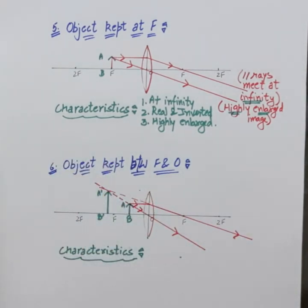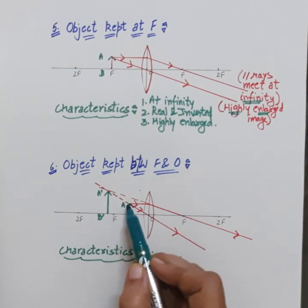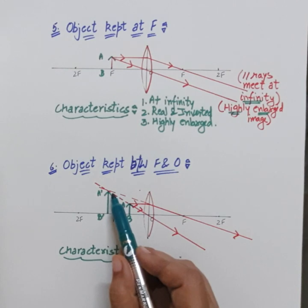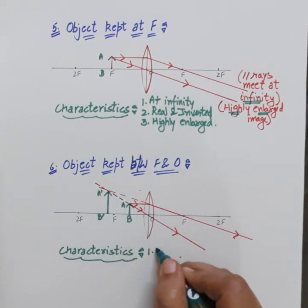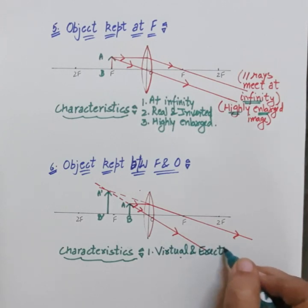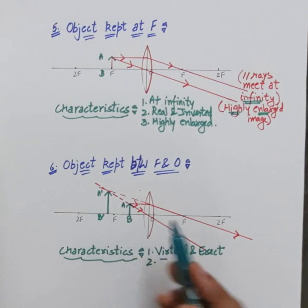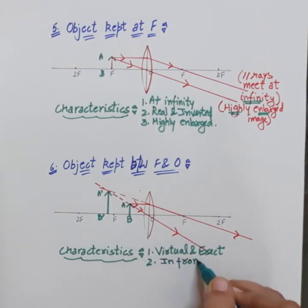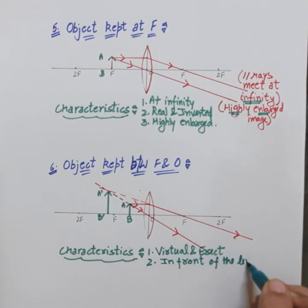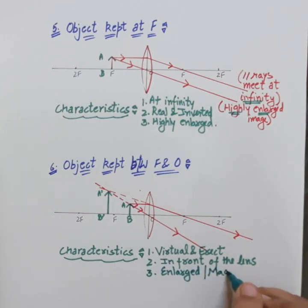Draw the shape of the lens. The first characteristic: this is the only case where it is not formed by real intersection but by extending the rays backwards — apparent intersection — so the image is virtual and erect. Second, the position: the image is formed in front of the lens, on the same side as the object. Third, the size: the image is enlarged — magnified — greater than the size of the object.